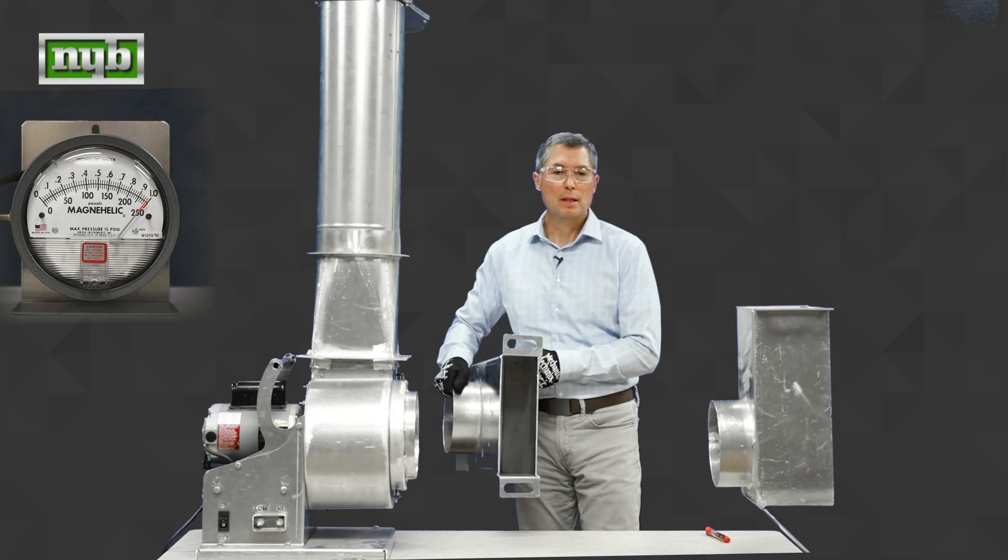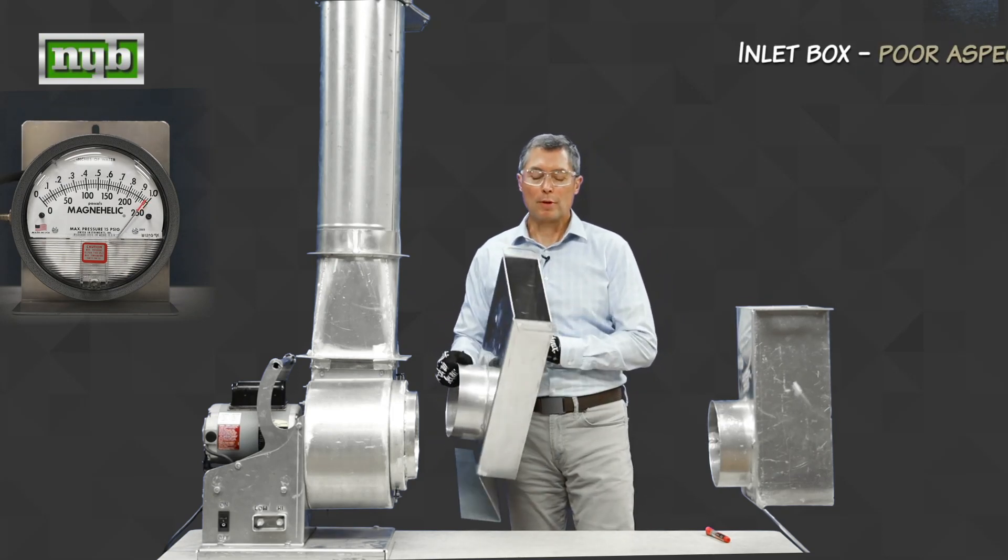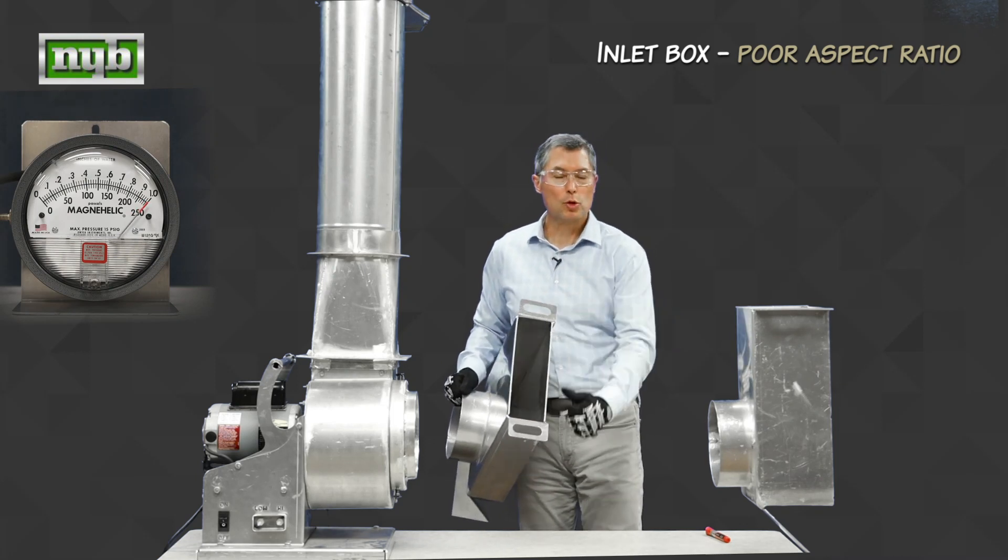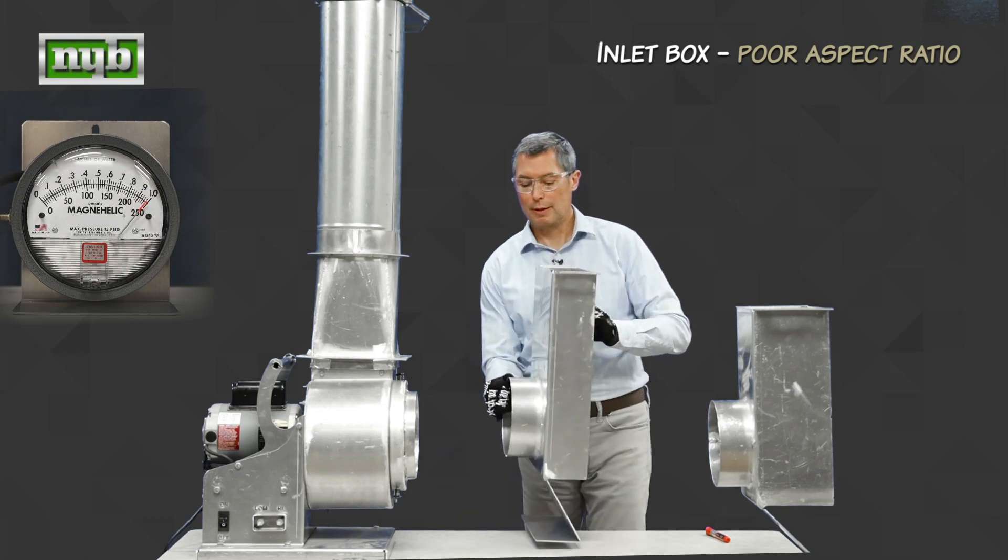When we look at this inlet box, it's just a box, nothing in it. However, it does have a poor aspect ratio. Its depth compared to its width is very narrow. It's very small. And let's see what happens when we put this on the fan.